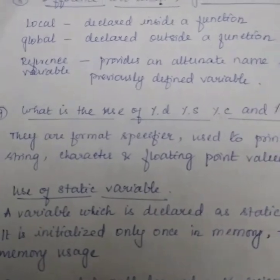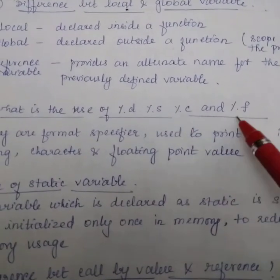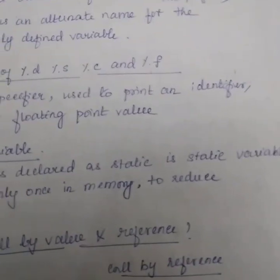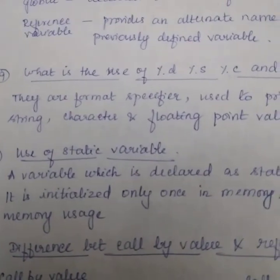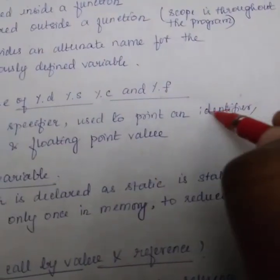Ninth question, what is the use of %d, %s, %c and %f? They are called format specifiers and used to print integer, string, character, floating point value.